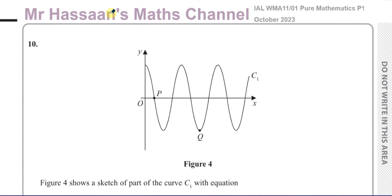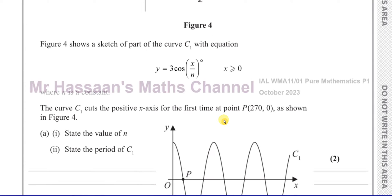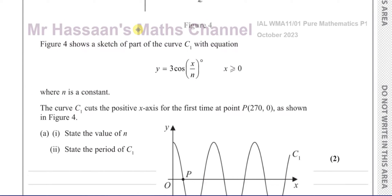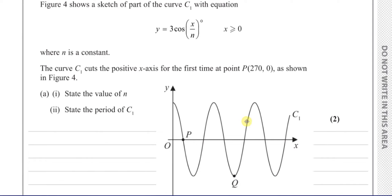Welcome back, this is Mr. Hassan's Maths channel. This is question 10 from the October 2023 International A-level Pure Mathematics P1 paper — a question about trig graphs. Figure 4 shows a sketch of part of the curve C1, which has the equation y equals 3 times cosine of x over n degrees, where x is greater than or equal to 0 and n is a constant. The curve C1 cuts the positive x-axis for the first time at the point 270, as shown in figure 4. State the value of n and state the period of C1.